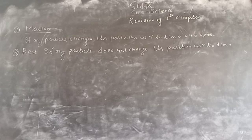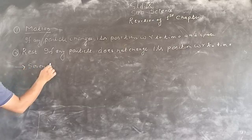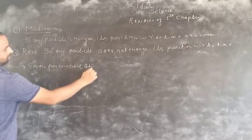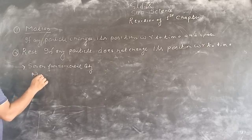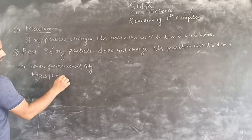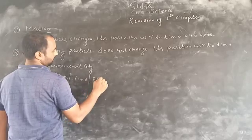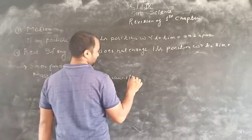Now we have to move further. We have justified two definitions: what is rest and what is motion. Now we have to know that there are seven fundamental quantities. The first fundamental quantity is mass, then length, time, electric current, temperature, luminous intensity, and amount of substance.